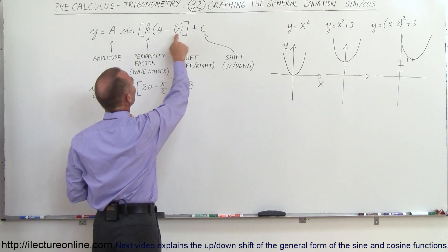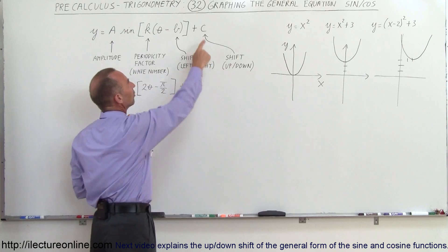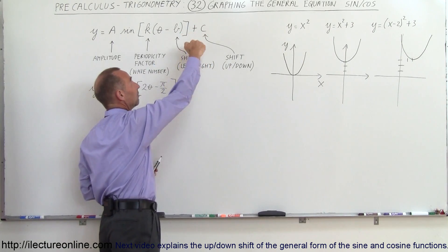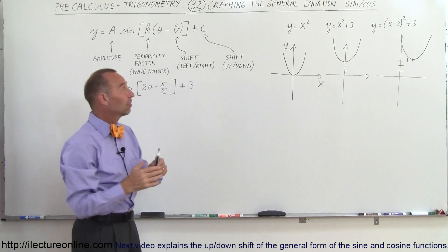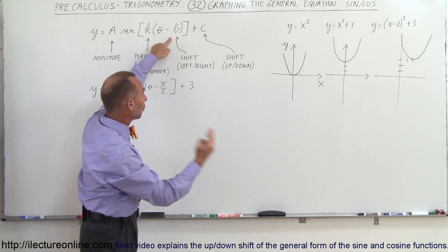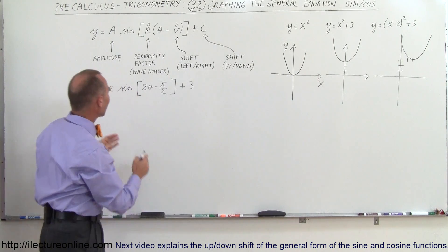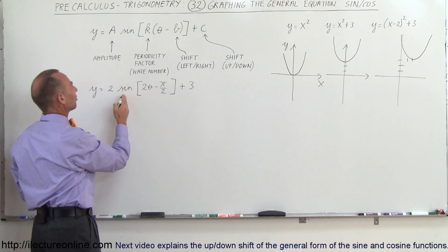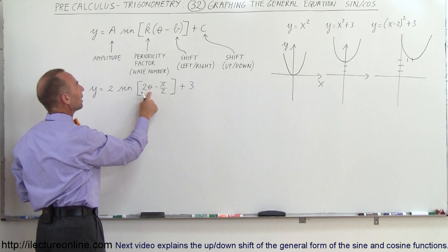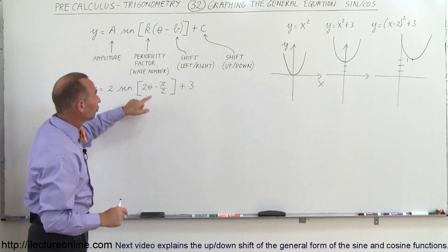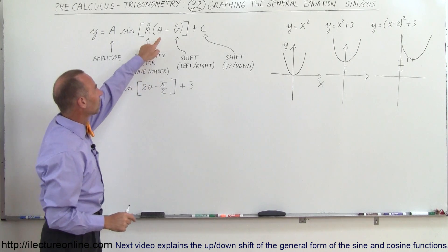Well here the constants b and c have the exact same function. C simply means that it would move it up or down. If it's positive it moves up, negative it moves down. The b here, if it's a negative b it would shift it to the right. If it's a positive b it would shift it to the left. Now here we have an example: y equals 2 times the sine of the angle 2θ minus π divided by 2 plus 3. But be very careful because notice that this doesn't look exactly the way it looks like that.